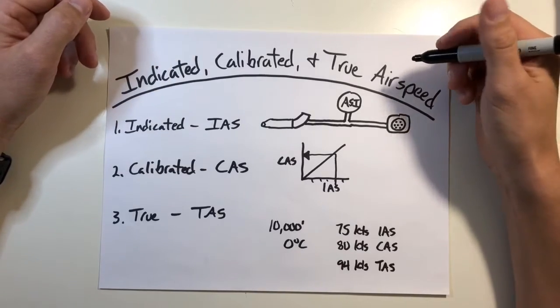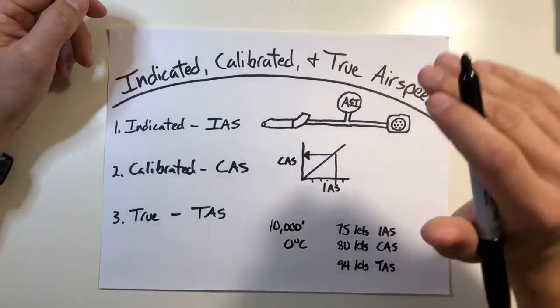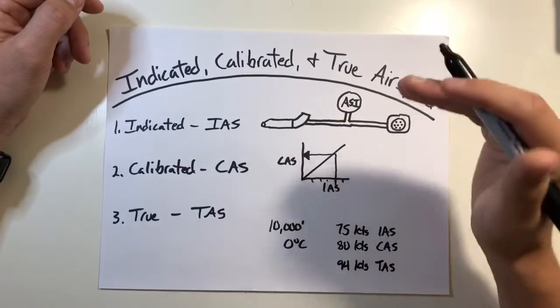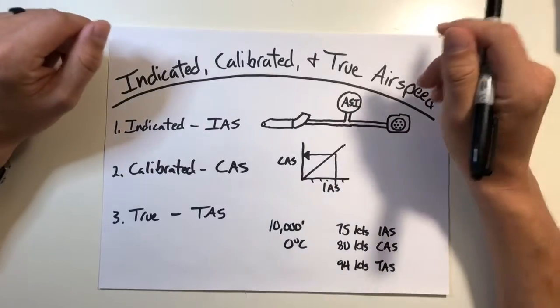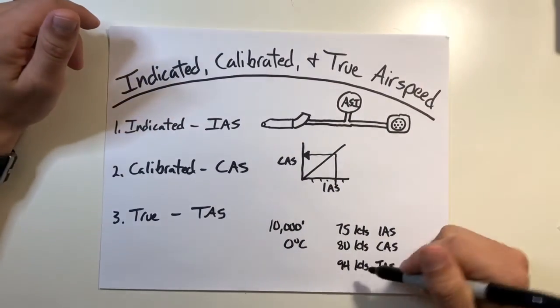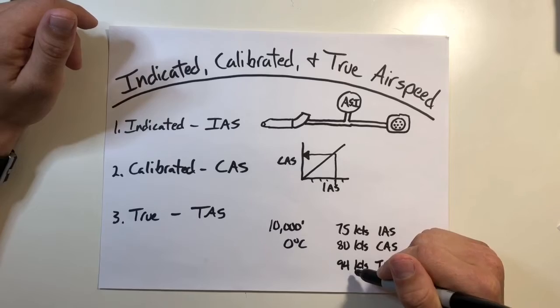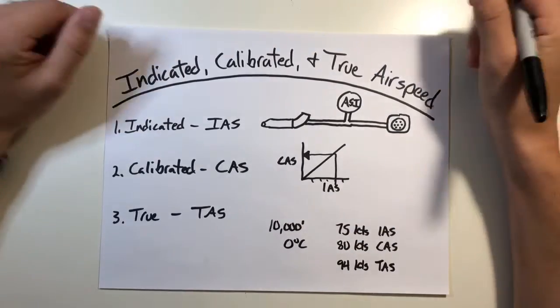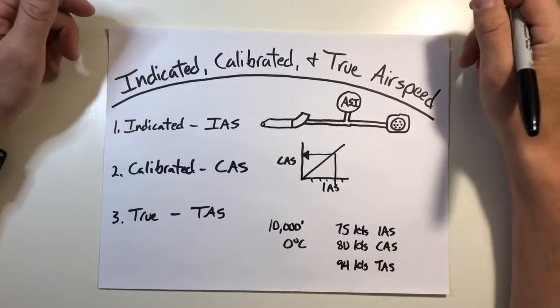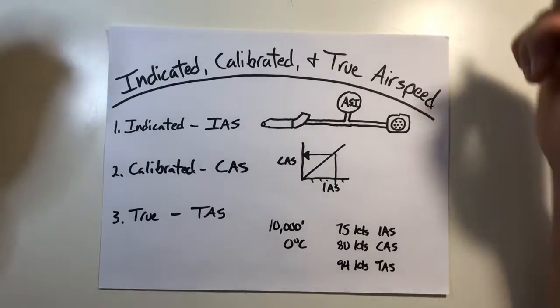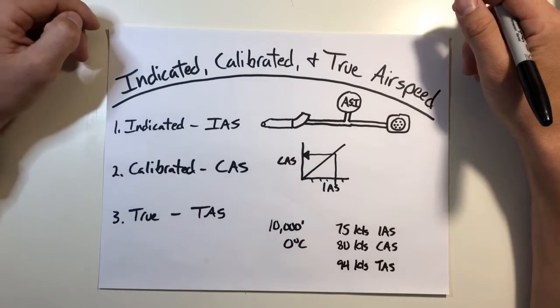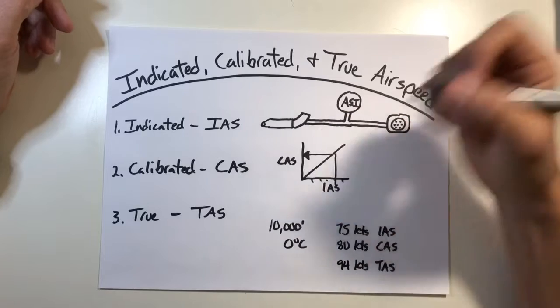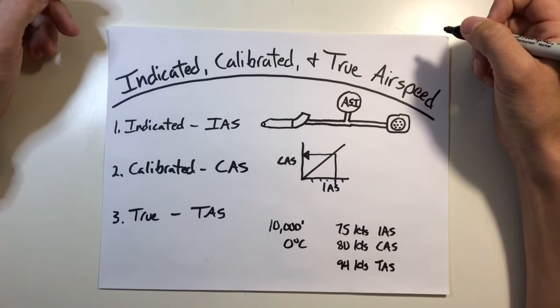So this means that if you maintain the same true airspeed and climb in altitude, that indicated airspeed is going to tick down less and less and less because there's just less air molecules in the air, but you are in fact traveling 94 knots true airspeed at 10,000 feet, not your 75 knots that you're getting as an indication in the cockpit. So it's kind of important to know because you're going to have subtle differences in your navigation and whatnot. But simply put, your true airspeed is going to be your real airspeed and may not be what's shown on your airspeed indicator.